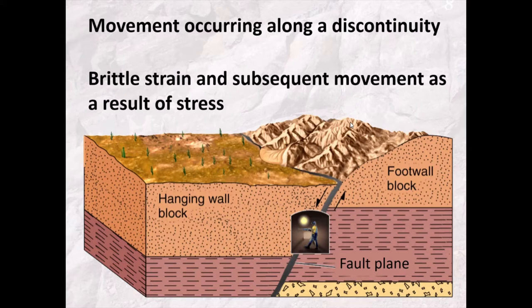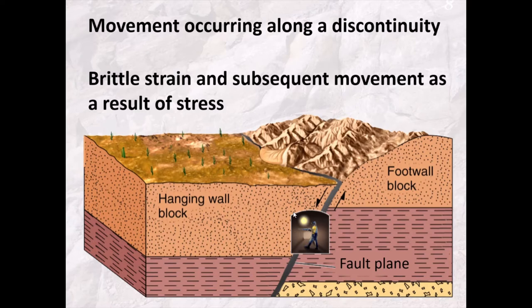When one of these fractures forms in the crust, we form a fault plane — a plane along which slip has occurred. We call the two halves of a fault plane different things: one is the footwall block and the other is the hanging wall block. The reason for these terms comes from mining — when you drive a mine shaft through a fault, the block on which you'd be standing is the footwall block, and the block to which you'd hang your lamp is the hanging wall block.